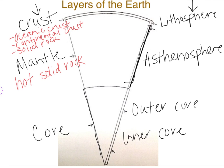It's super, super hot, so it can still flow a little bit, but it is solid. And then the core, it is liquid and solid. And it is made of iron and nickel, which are metals. Let's see, metals here.